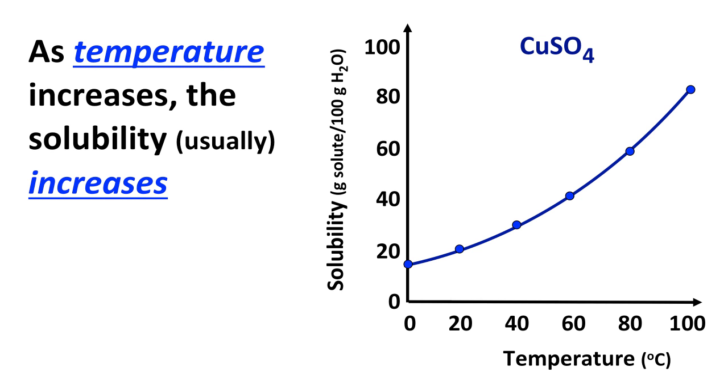First of all, as the temperature increases, the solubility usually increases. In this case, it certainly does. And if we are on the line, we've got the maximum solubility just barely. If we're below the line, we have not enough copper sulfate in this case to reach the maximum solubility. So we say the solution is unsaturated.